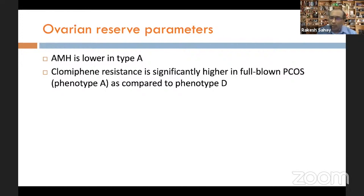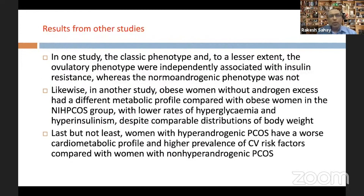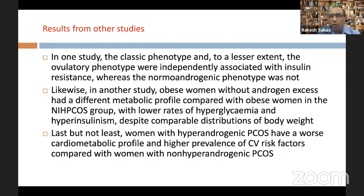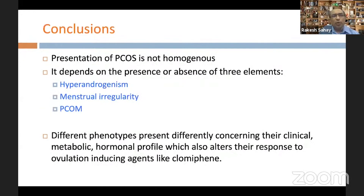AMH levels, reflecting ovarian reserve, are lower in phenotype A, and clomiphene resistance is significantly higher in the full-blown phenotype A compared to phenotype D. Results from many other studies across the world have shown similar findings, confirming that women with hyperandrogenic PCOS have a worse cardiometabolic profile and a higher prevalence of cardiovascular risk factors compared to women with non-hyperandrogenic PCOS.